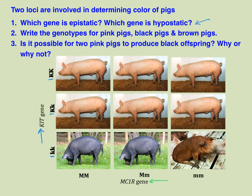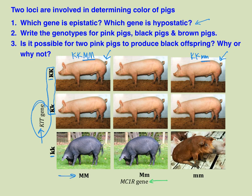To figure out which gene is epistatic, compare two pigs: one with genotype KKMM and another with KKmm. These individuals have totally different genotypes at M but the same phenotype, suggesting that KIT — specifically having at least one dominant K — masks what's happening at MC1R. It's only in individuals with no dominant K alleles that we can see the effect of MC1R: dominant MC1R gives black color, and homozygous recessive MC1R gives brown. So KIT is the epistatic gene and MC1R is the hypostatic gene.